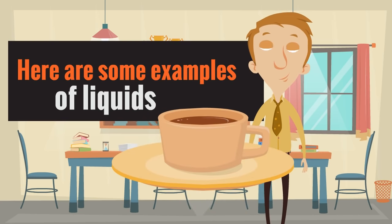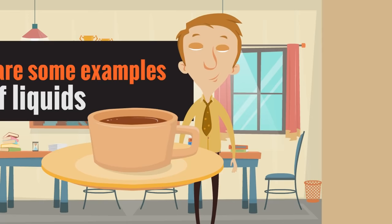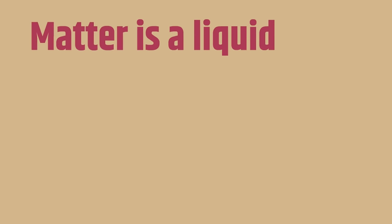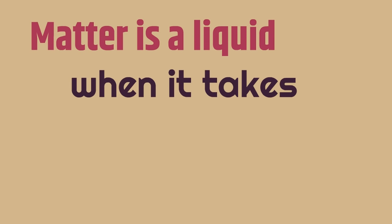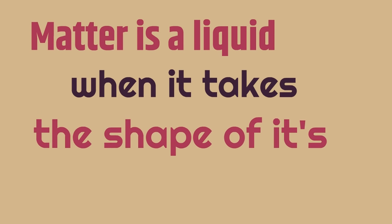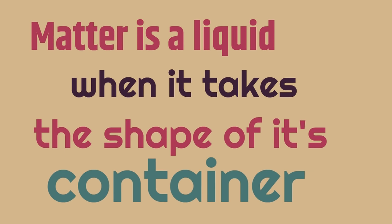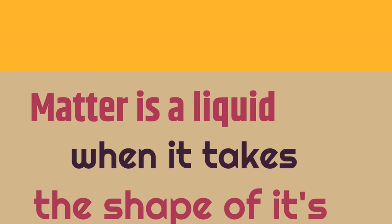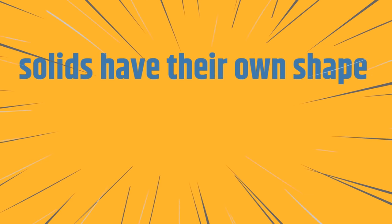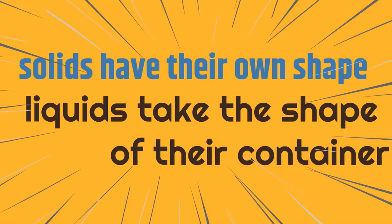Here's the last example of a liquid. It's coffee, and it's in this cup. It's taking the shape of the cup because it's a liquid — it doesn't have a shape. Matter is a liquid when it takes the shape of its container. So solids have their own shape and liquids take the shape of their container.